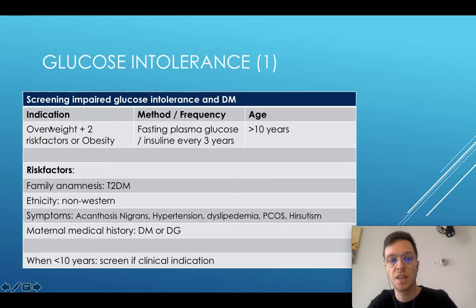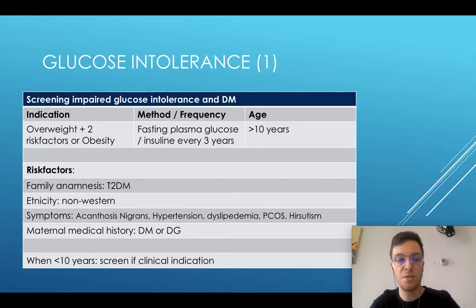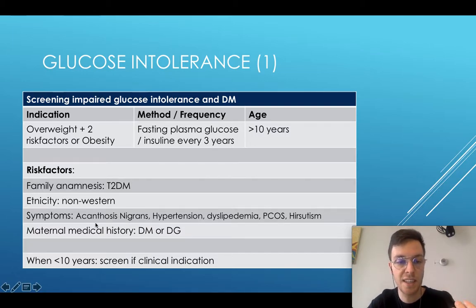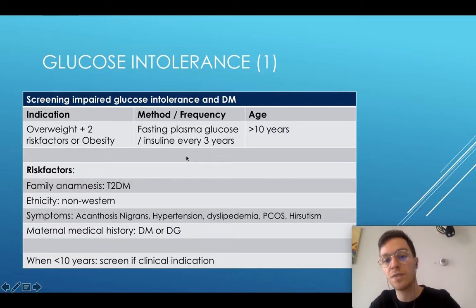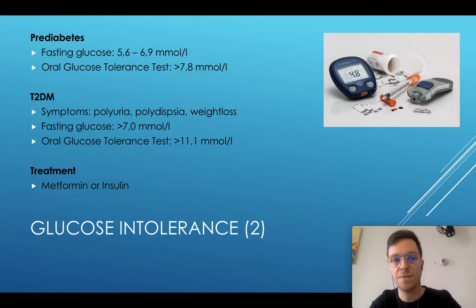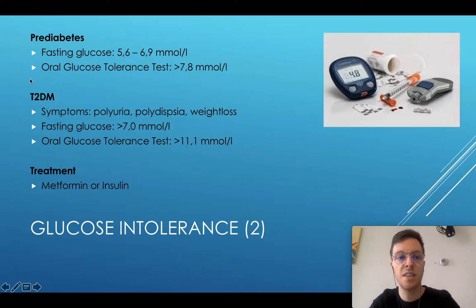First of all, glucose tolerance. You should assess this if the child is overweight and has two or more risk factors, or when it's obese. The risk factors are type 2 diabetes in the family, non-western ethnicity, symptoms like acanthosis nigricans, hypertension, dyslipidemia, polycystic ovarium syndrome or hirsutism, and a maternal medical history of diabetes or gestational diabetes. In this case, you should test the fasting plasma glucose and insulin every three years when the child is older than 10, and when younger than 10 you only screen if there is a clinical indication. The child has pre-diabetes when the fasting glucose is 5.6 to 6.9 mmol/L and when the oral glucose tolerance is more than 7.8 mmol/L.